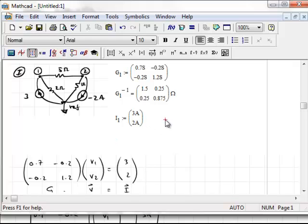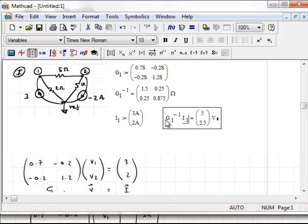And I can evaluate G inverted times I1. I can do that right now. If I press equal, it will evaluate it for me. Or I could also assign this to a variable V1. So that's what I'm going to do here.